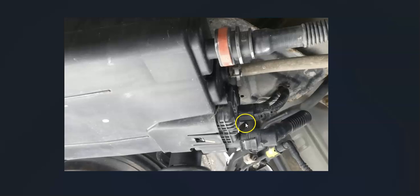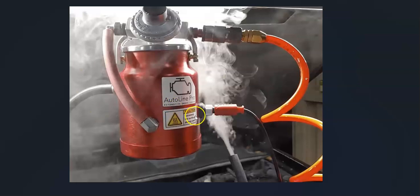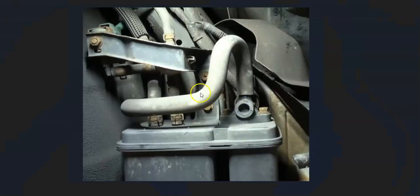If you've checked the vent valve, charcoal canister, and all the wiring and everything looks good with no blown fuses, the next step is to check for an EVAP leak somewhere in one of the hoses. A mechanic would use a smoke machine — feeding smoke into the EVAP system and seeing where it comes out to identify leaks. There are low-cost smoke machines on Amazon or eBay, and there are also DIY smoke machines you can build yourself for about five or ten dollars; there are good YouTube videos on how to make one.